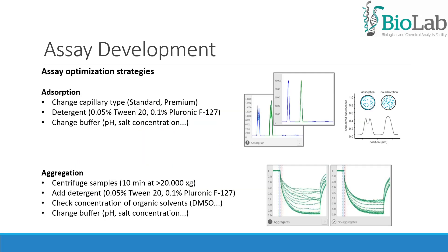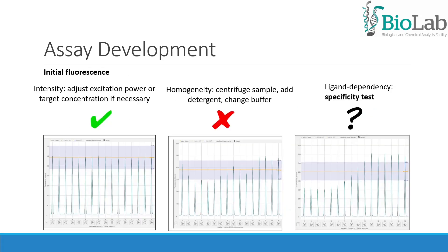When adsorption occurs, you can change the capillary type, add detergent, or sometimes change your buffer. To avoid aggregation, centrifugation, addition of detergent, or changing buffer composition are strategies that can be used. The initial fluorescence of the capillaries should be homogeneous and should not vary above 20%. Inaccurate pipetting is sometimes the cause of fluorescence variation, but centrifugation or addition of detergent may also help.